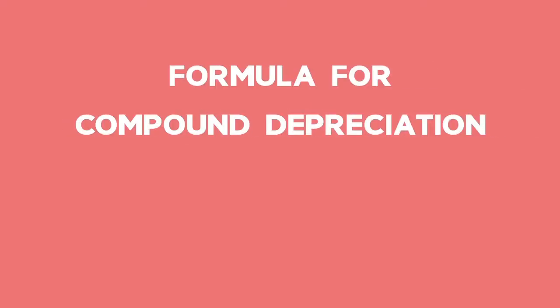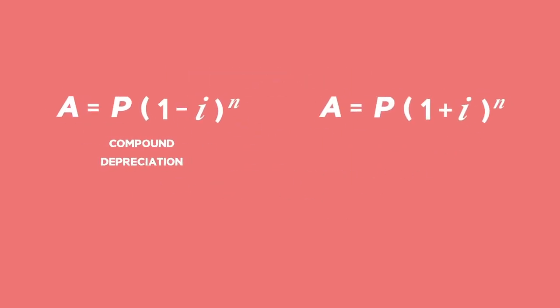The formula that we use for compound depreciation is A equals P and in brackets 1 minus i to the power of n. The formula looks similar to the formula for compound interest.